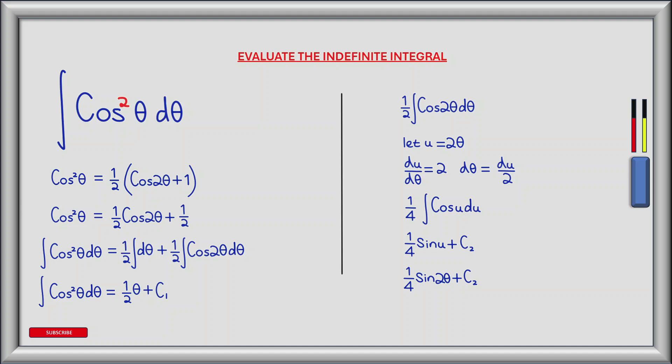If we now look at evaluating our second integral, where we have one half multiplied by the integral of cos 2 theta d theta, for this we'll use u substitution. So to begin we'll let u equal 2 theta. Then du by d theta is equal to 2, and it follows that d theta is equal to one half du.